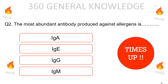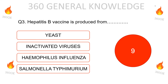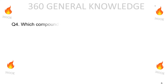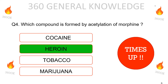Hepatitis B vaccine is produced from: yeast, inactivated viruses, Haemophilus influenza, or Salmonella typhi. The correct answer is yeast. Which compound is found by acetylation of morphine: cocaine, heroin, tobacco, or marijuana? The correct answer is heroin.